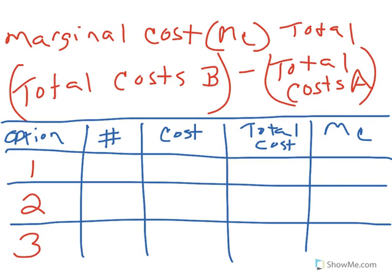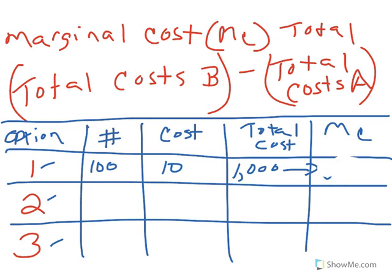Let's say we have three options: option one, option two, and option three. In option one, we could produce 100 units at a cost of $10 per unit, which gives us a total cost of $1,000. Our marginal or extra cost is simply going to be our total cost of $1,000, since our prior run or option zero would be zero. Otherwise, you could leave this blank as not applicable, as was the case in your assignment.